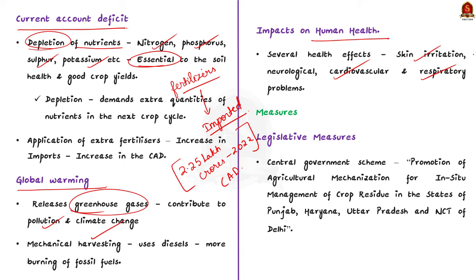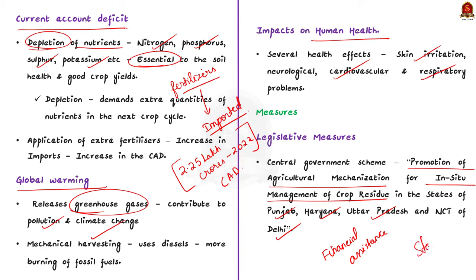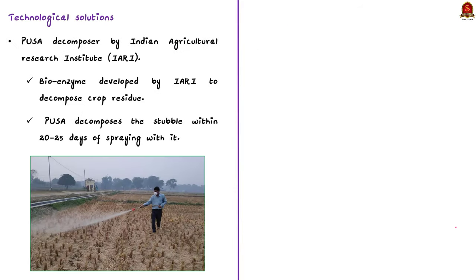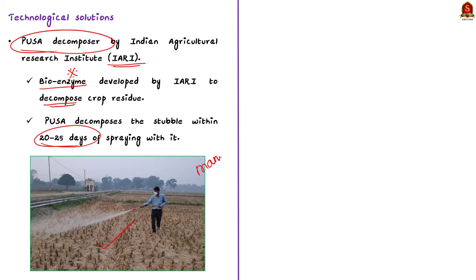Now let us see the steps taken by government to prevent stubble burning. The central government has introduced a scheme called Promotion of Agricultural Mechanization for In-Situ Management of Crop Residue. This scheme is implemented in Punjab, Haryana, Uttar Pradesh, and Delhi, and under this scheme farmers are given financial assistance for purchase of machinery to deal with crop residue management. Moreover, state governments are also taking steps to reduce stubble burning. Next is Pusa Decomposer, developed by the Indian Agricultural Research Institute. It is a bio-enzyme which can decompose crop residue. Pusa decomposes the stubble within 20 to 25 days and turns it into manure, thus improving soil quality.